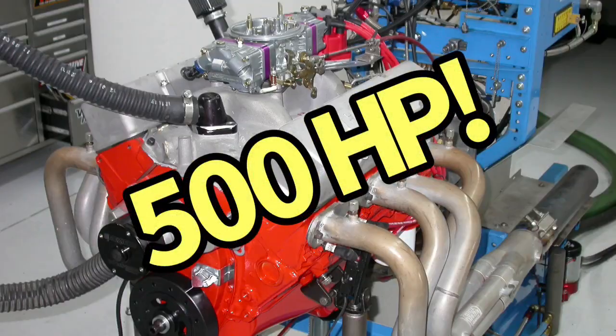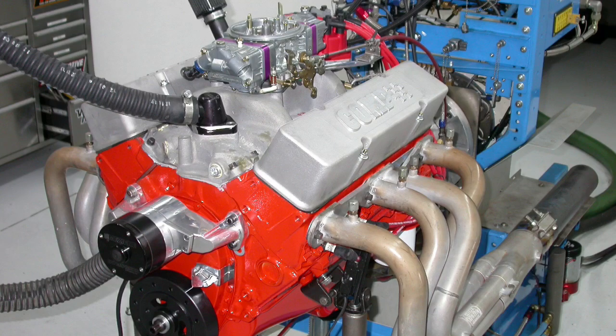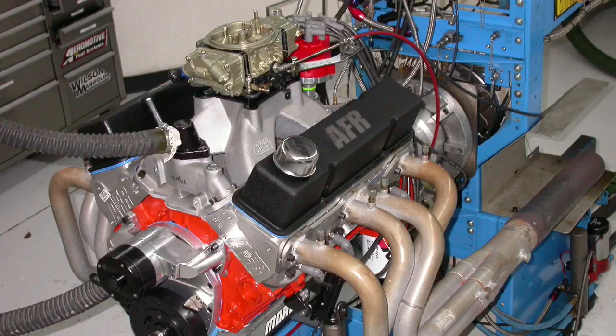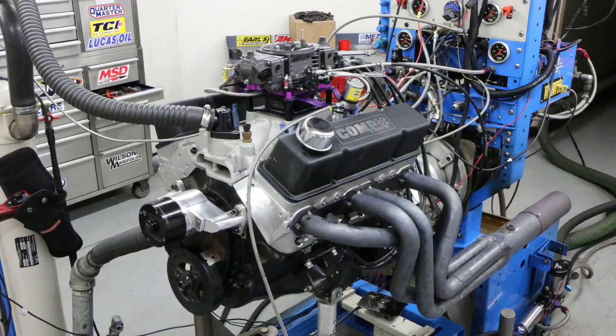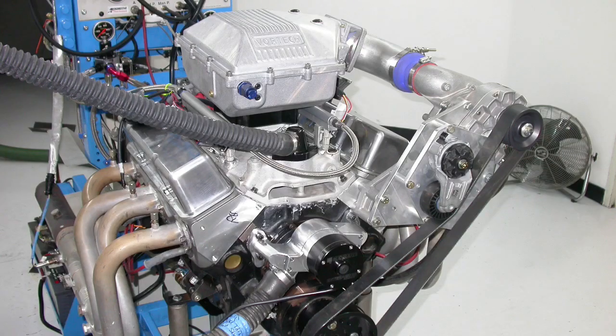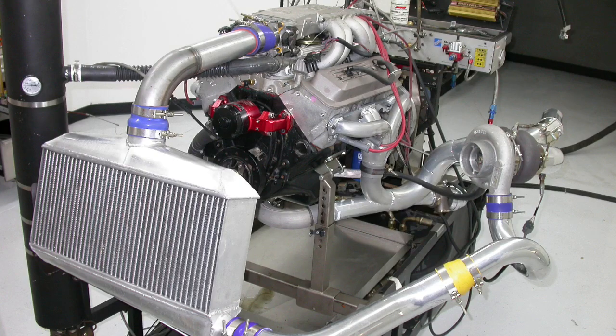And the question for today, Richard, how can I make 500 horsepower with a small block Chevy? Can I do it naturally aspirated? Can I do it with the little 305? Can I do it with nitrous or maybe a blower or maybe a turbo or a stroker motor? The answer to all of those questions is yes, here's how.